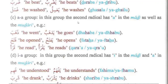In this group, the second radical has fatah in the madi as well as in the mudari. Example: dhahaba — he went; yathhabu — he goes.